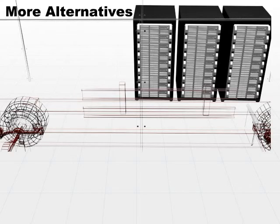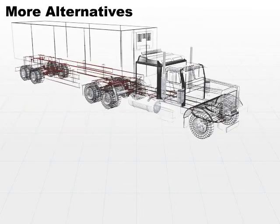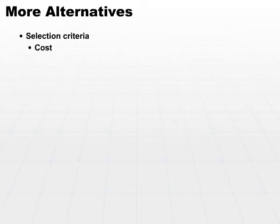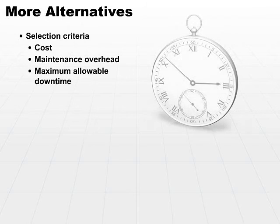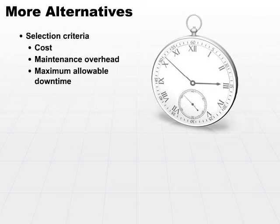How do you choose between these different options? You have to look at the cost, the maintenance overhead, and one of the most critical factors: the maximum allowable downtime. If your business has a very short maximum allowable downtime in the range of hours, you may need to go with a hot site. If you can afford to be down for several days, a cold site may satisfy the needs.